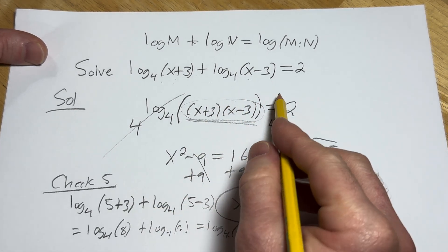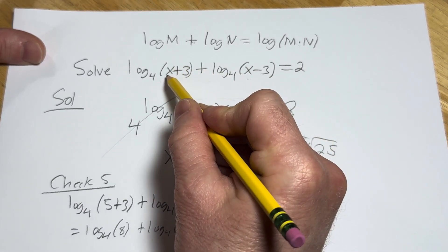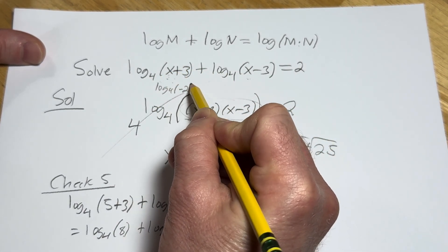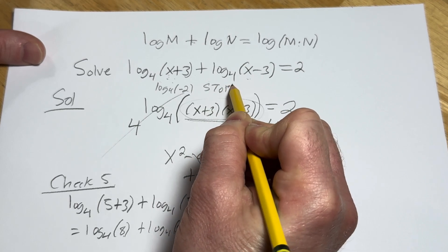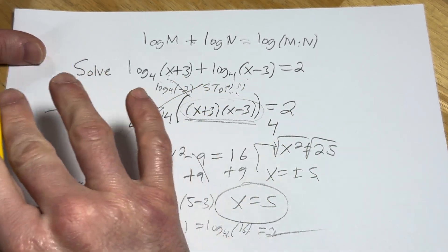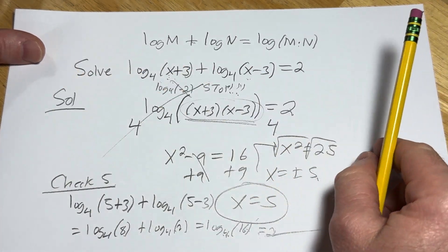Negative 5 does not work. You can just look here. If you put a negative 5 here, you get log base 4. Negative 5 plus 3 is negative 2. And this is where you stop. Don't keep going, right? You can't take the log of a negative number. It doesn't make any sense. So the answer is just 5.